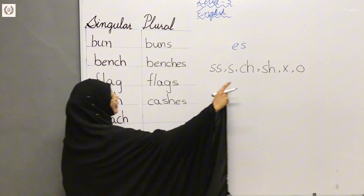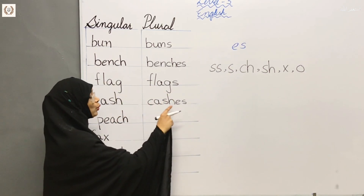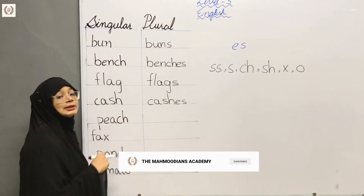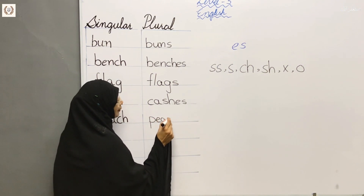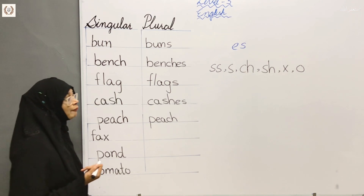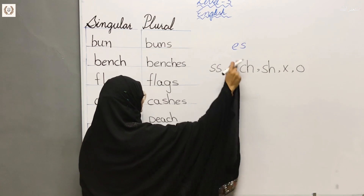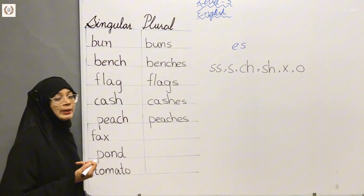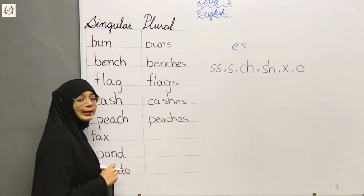The rule is that the spelling ends in C-H. What is the ending sound? So if we put a plural, we call it as a plural. P-E-A-C-H — Peach. When the word ends in C-H, what do we add to make it plural? We add ES — Peaches.